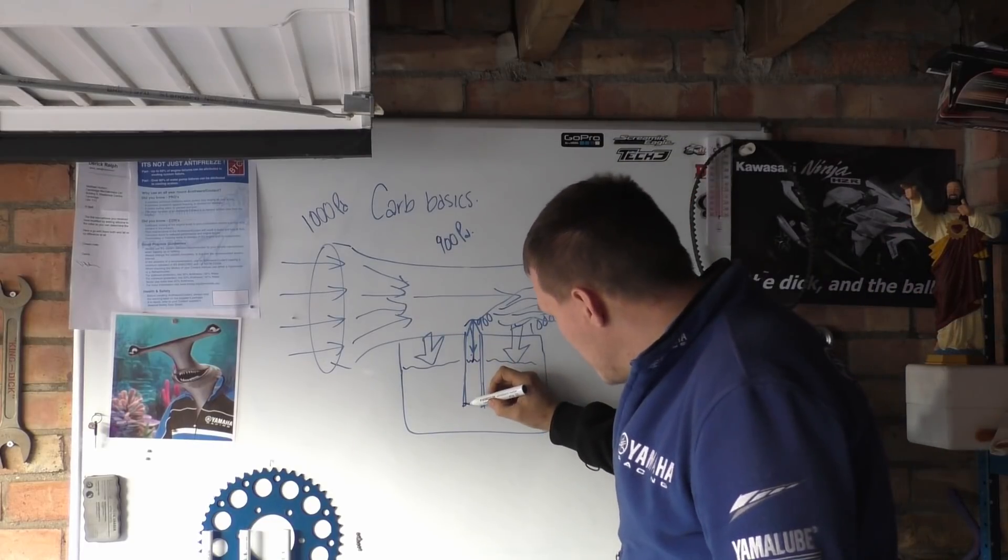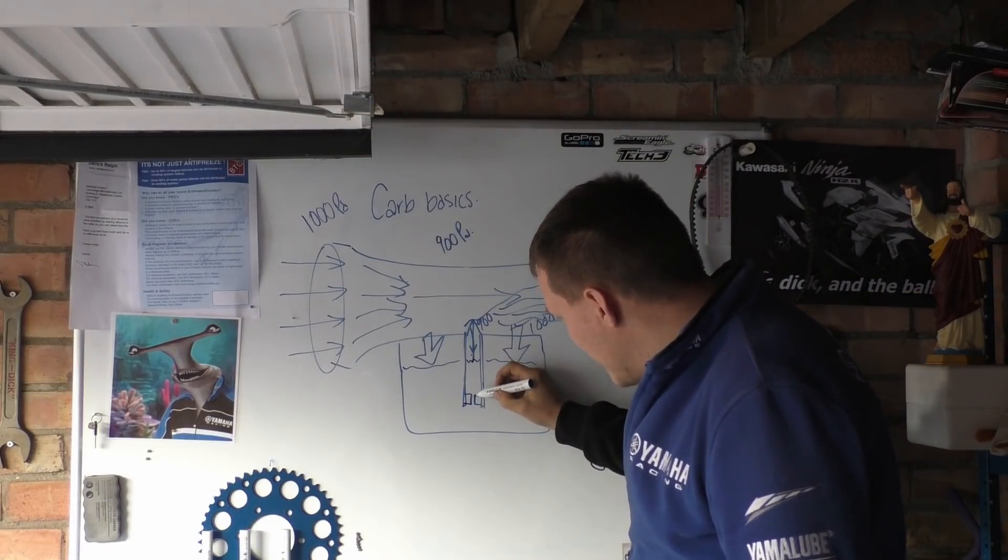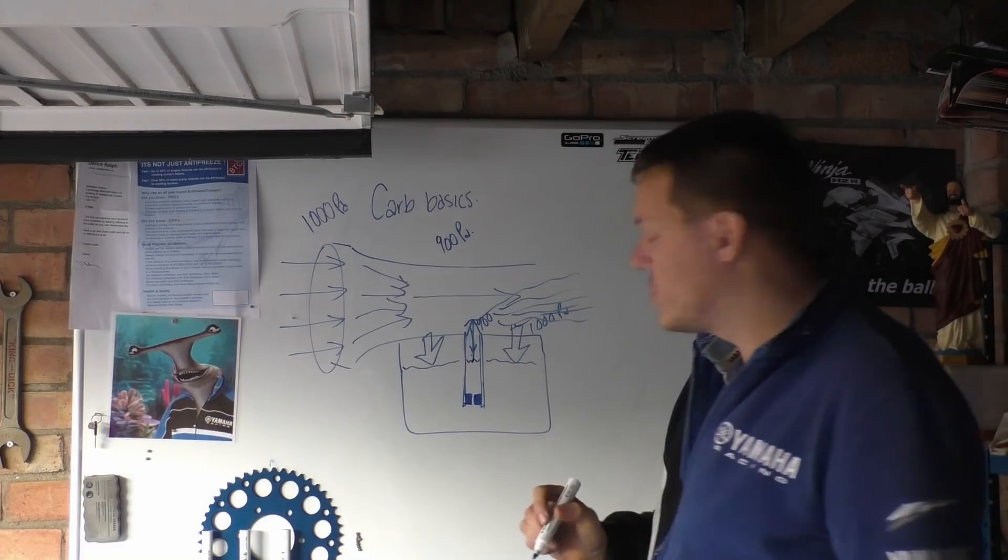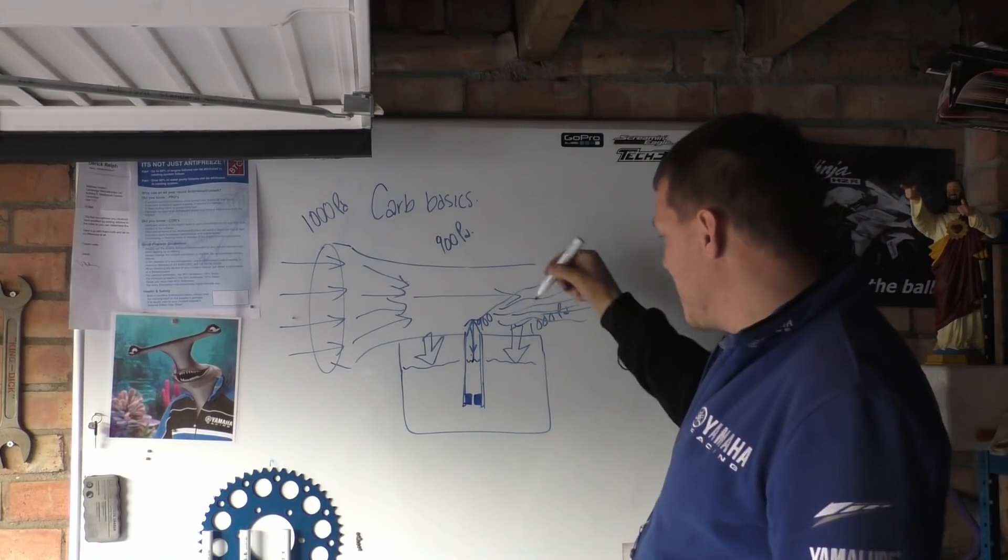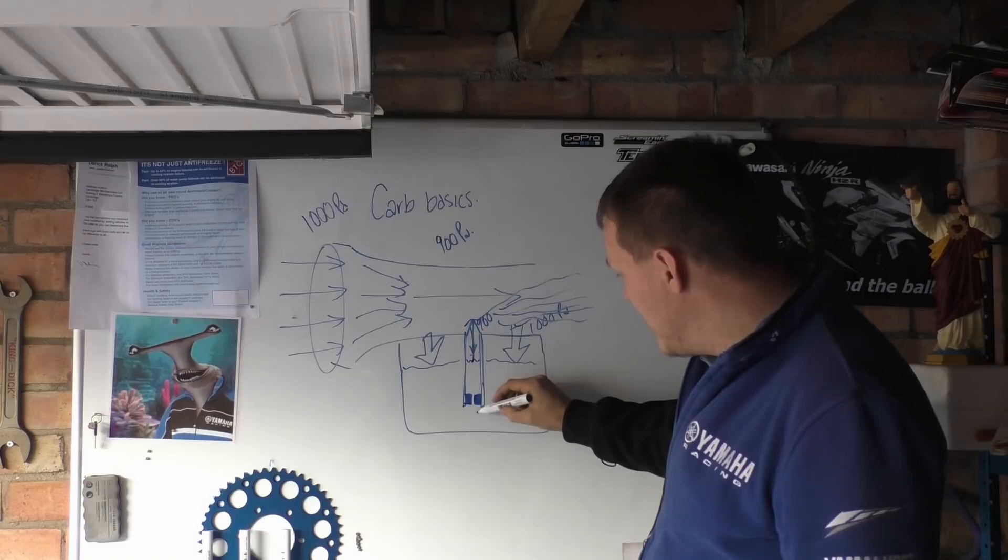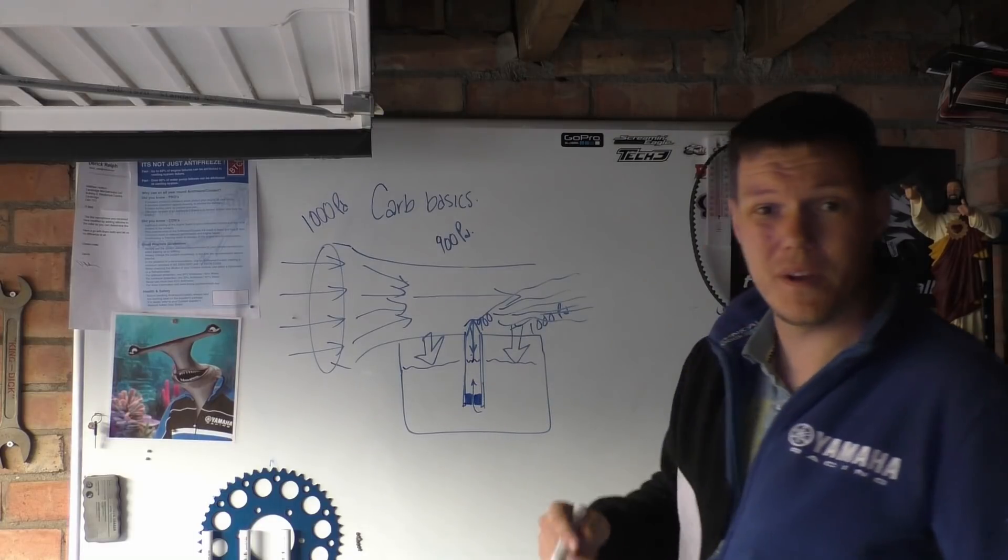What we do is we put our main jet in there, which is basically a little brass plug with a hole in it. So that we have a fuel rate. This might force down, and the faster you go, the lower the pressure drop and all this, but this meters how much fuel can actually pass through per second up this tube.